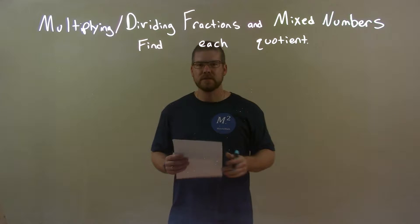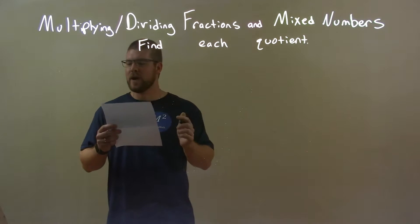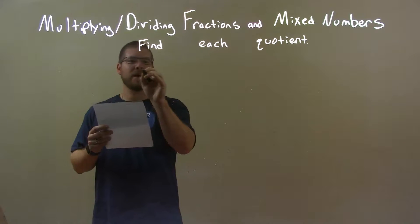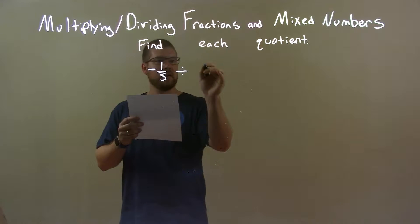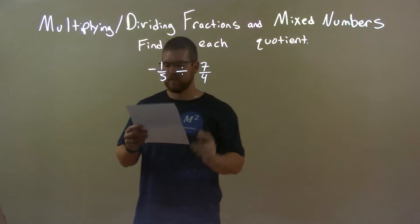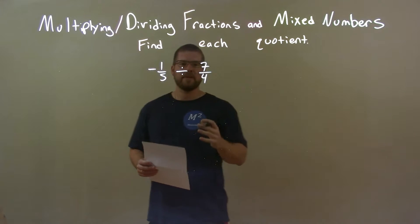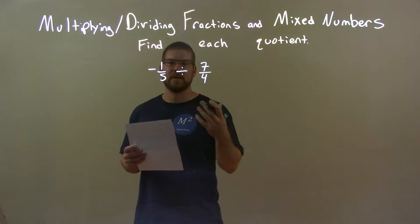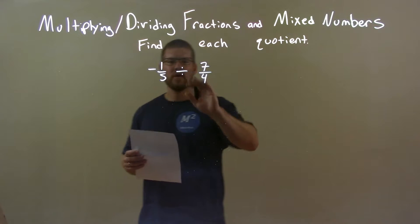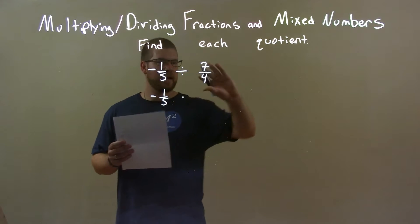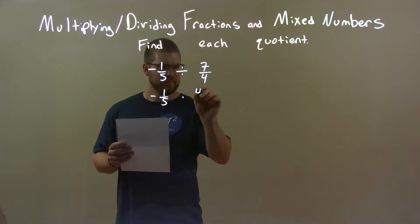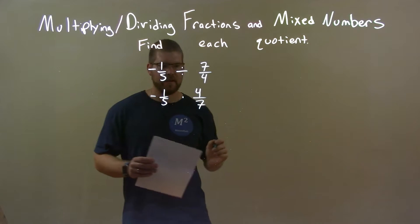We're going to find each quotient. So, if I was given these fractions, negative one-fifth divided by seven-fourths. Well, if you're like me, I like to see this as multiplication, not division. So to convert division to multiplication, negative one-fifth times, and I flip the second number, four over seven now.